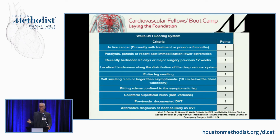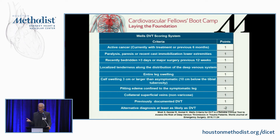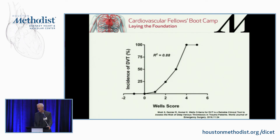The Wells score is a way to classify people's risk. In reality, almost any patient you're going to see is going to have at least one point, because when you go see somebody in the emergency room, practically everybody has been laying around or they've got some localized tenderness. You have to be totally clean in terms of risk on the Wells score. But if you've got multiple points — cancer and been lying in bed — you've got a pretty good chance that the swollen leg is related to DVT.